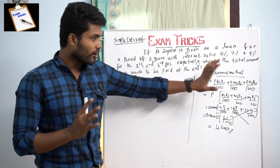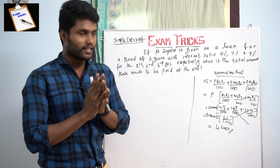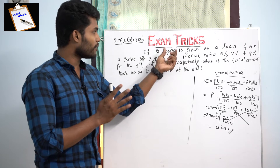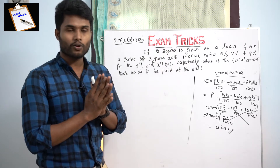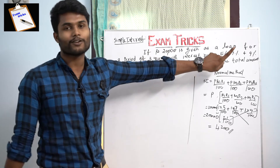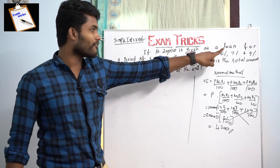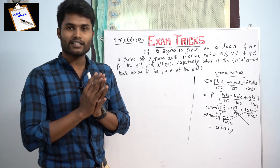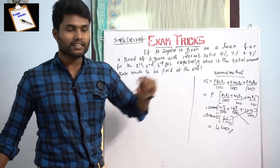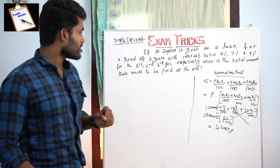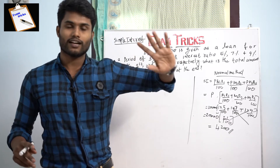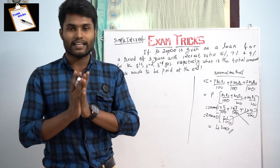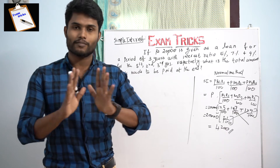Okay, so the normal method is solved. This is a simple interest question. If the student is ready to go to the next, all of the courses — they have to get the first year, you can take the second year from the next year, for the next year 7%, and for the next year 9%. Now, we want to find the answer for the third year only.